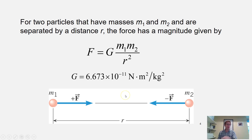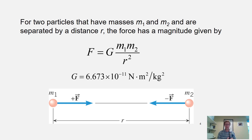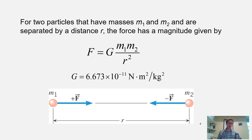Notice that 10 to the negative 11th power is a very small number. That's why my water bottle isn't being magnetically drawn and sticking to me — because G is such a tiny number. The mass of the water bottle and my mass are not hugely massive, and even at a very small distance, that attractive force is still very weak since we're multiplying by 6.673 times 10 to the negative 11th power.